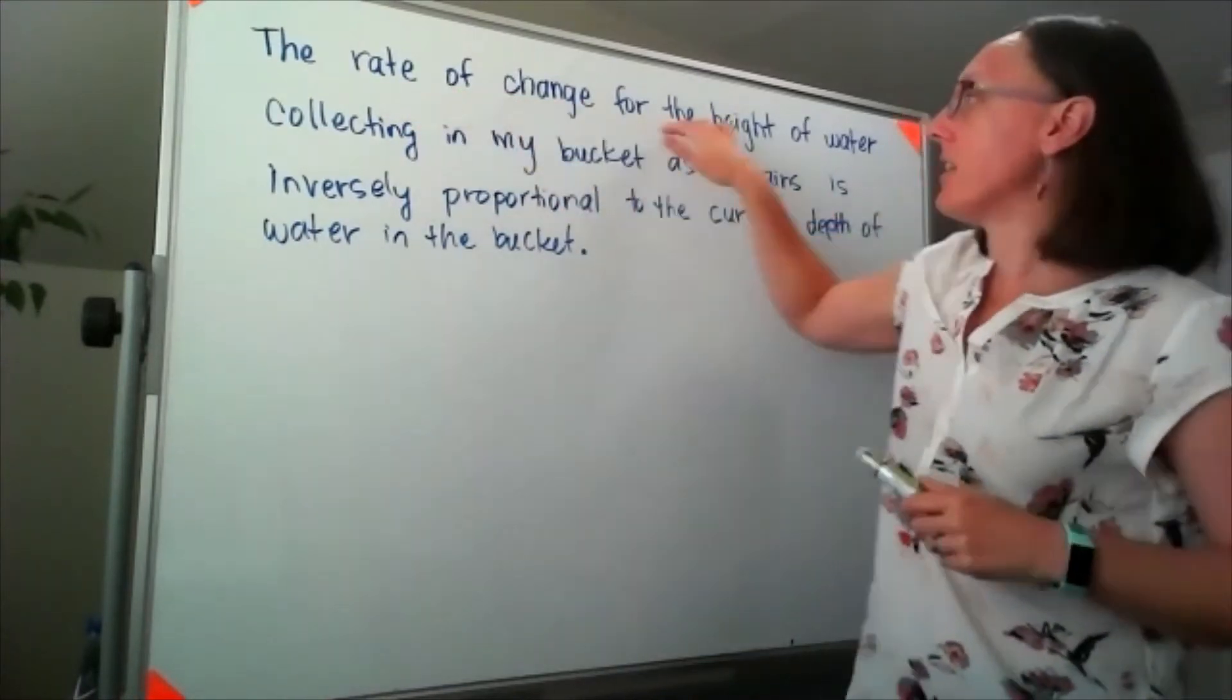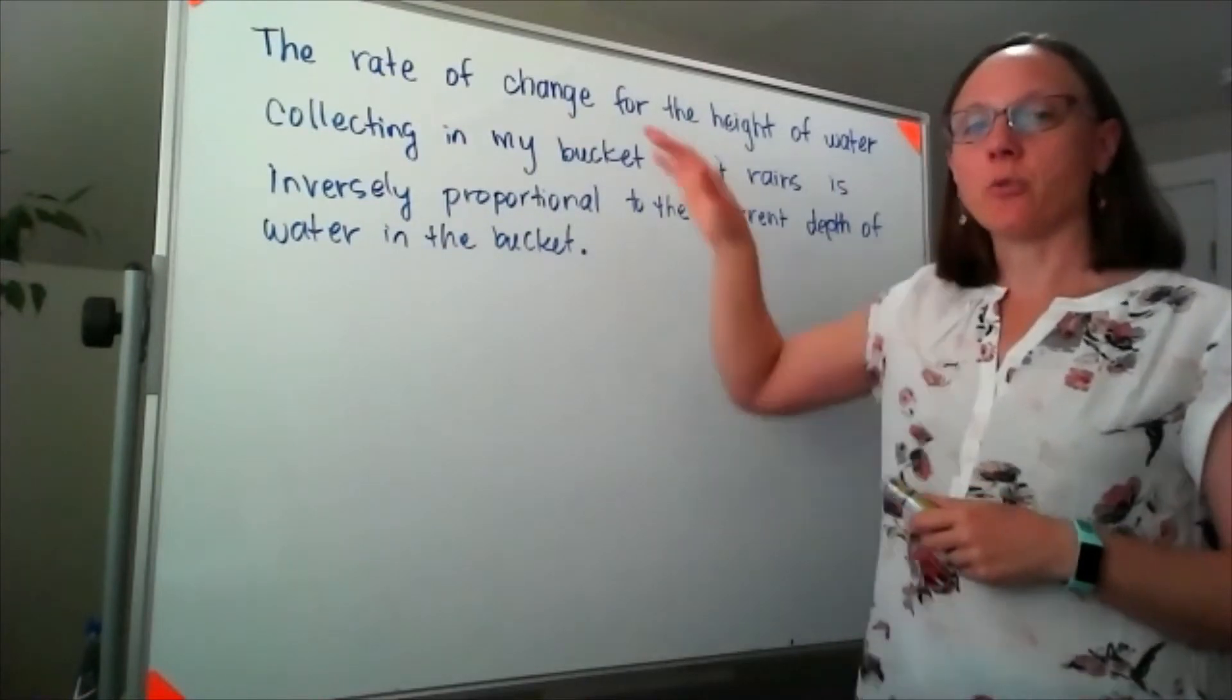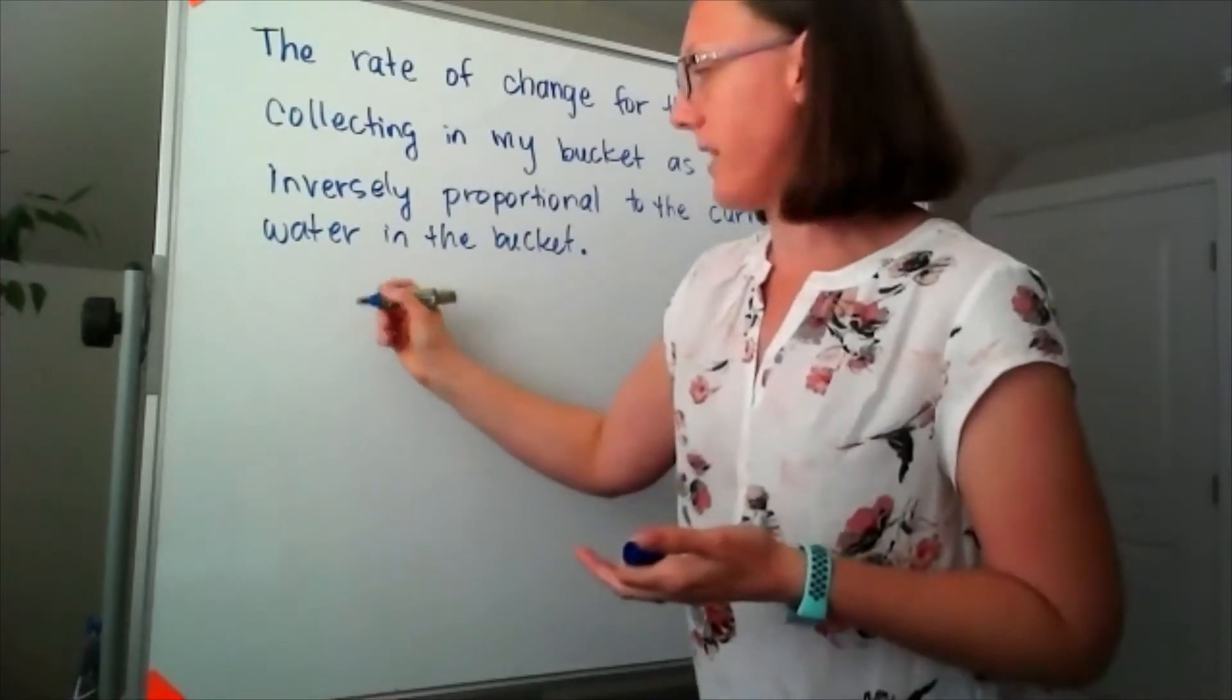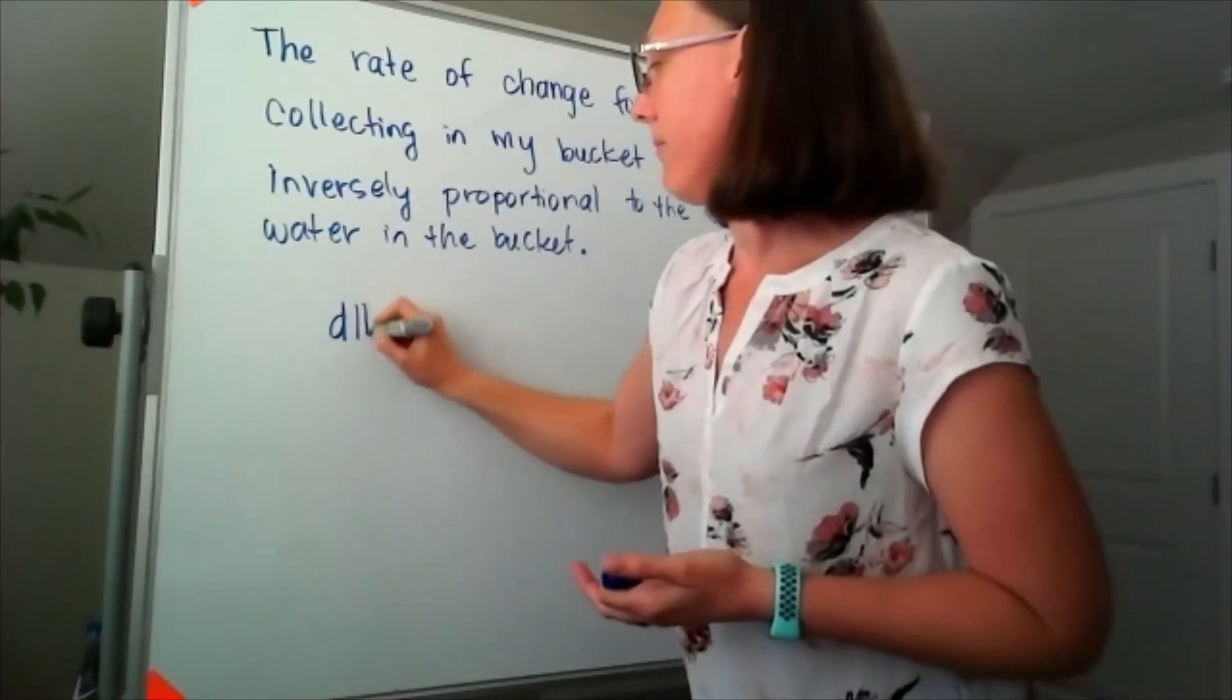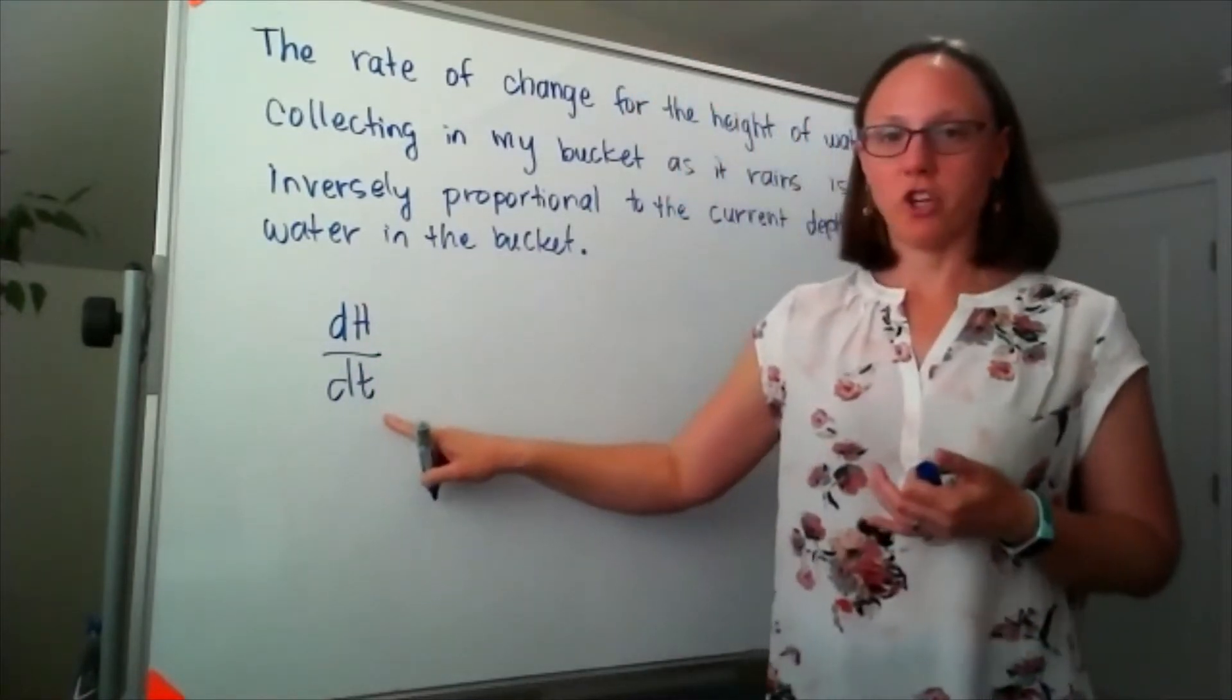That rate of change is going to be our derivative, and since we're looking at the rate of change for the height of water in the bucket, I'm going to call that dh/dt. That's our rate of change part.